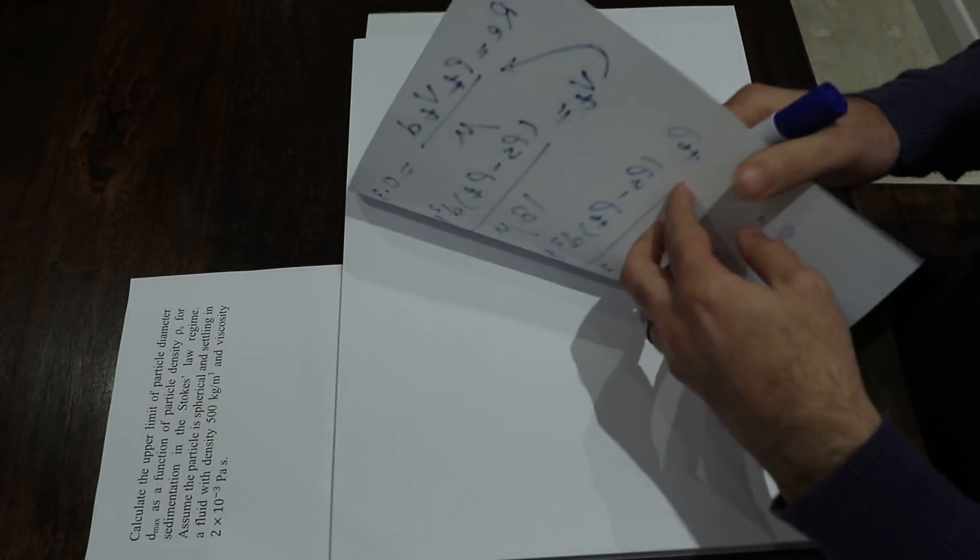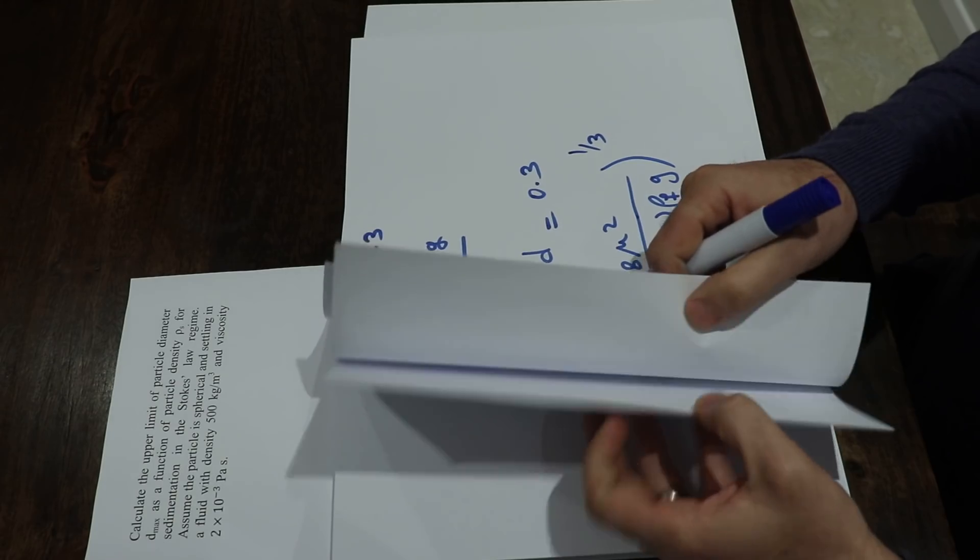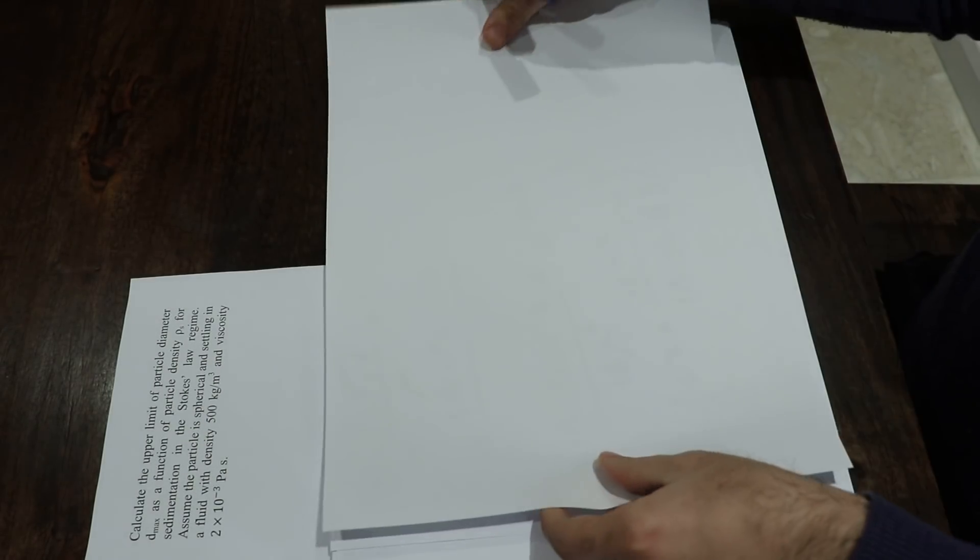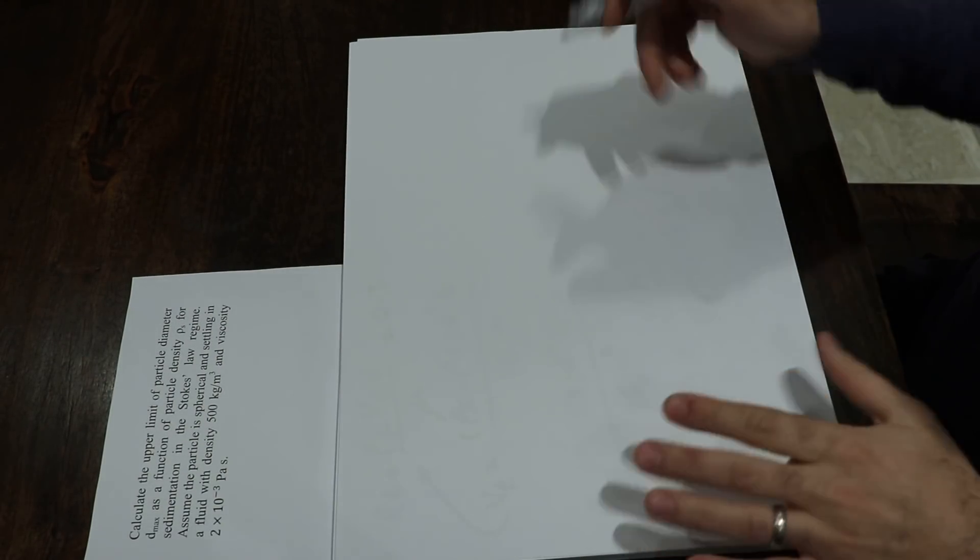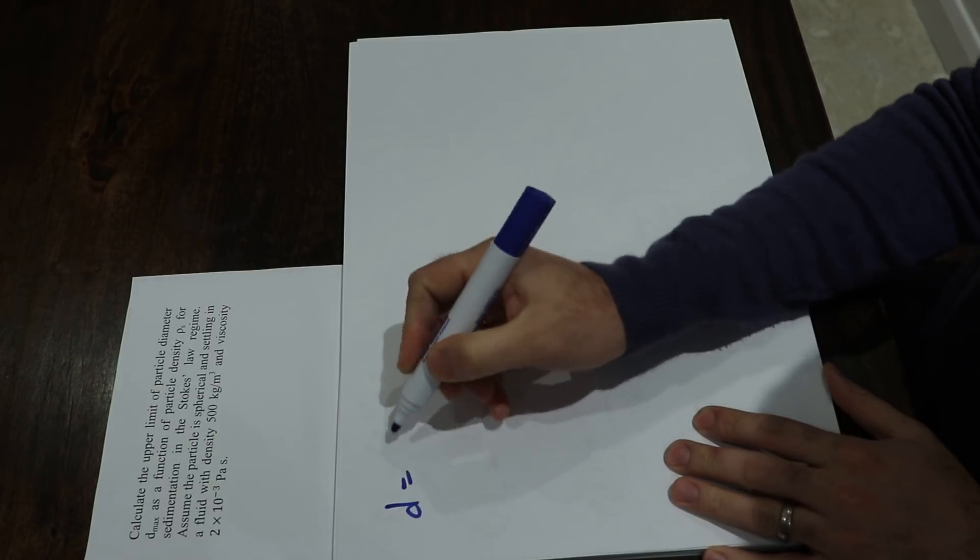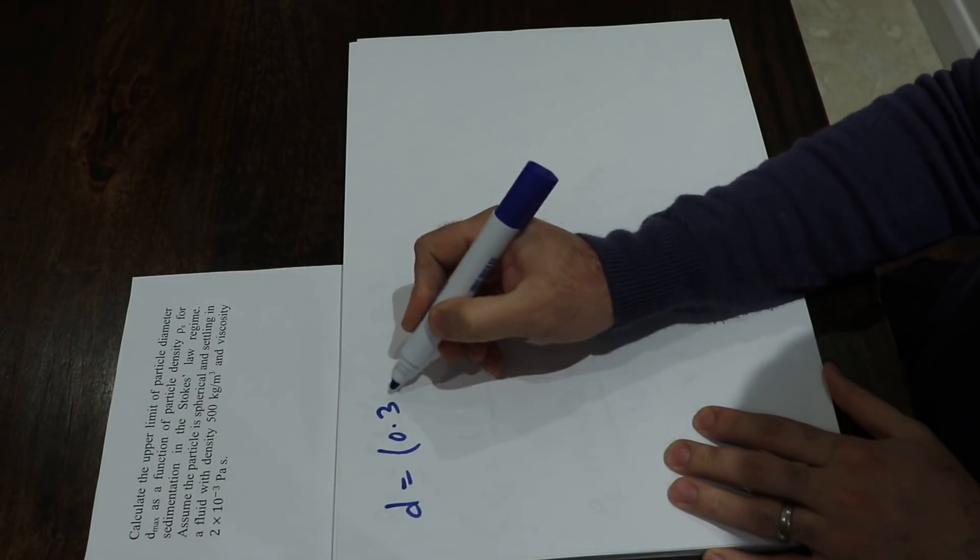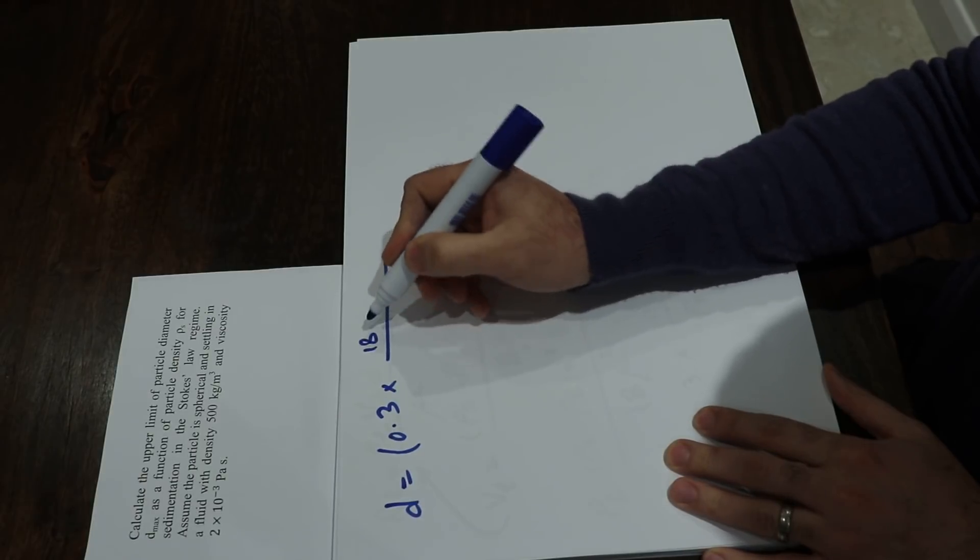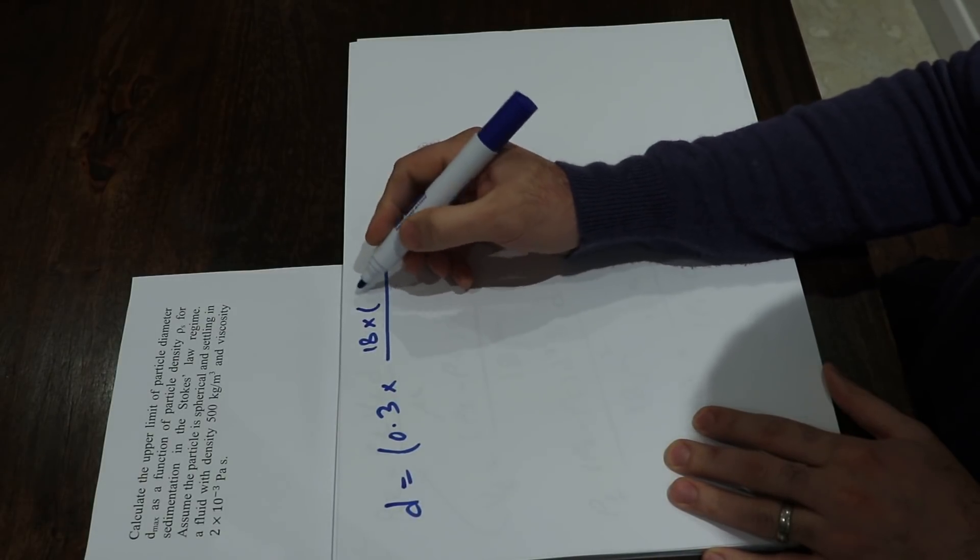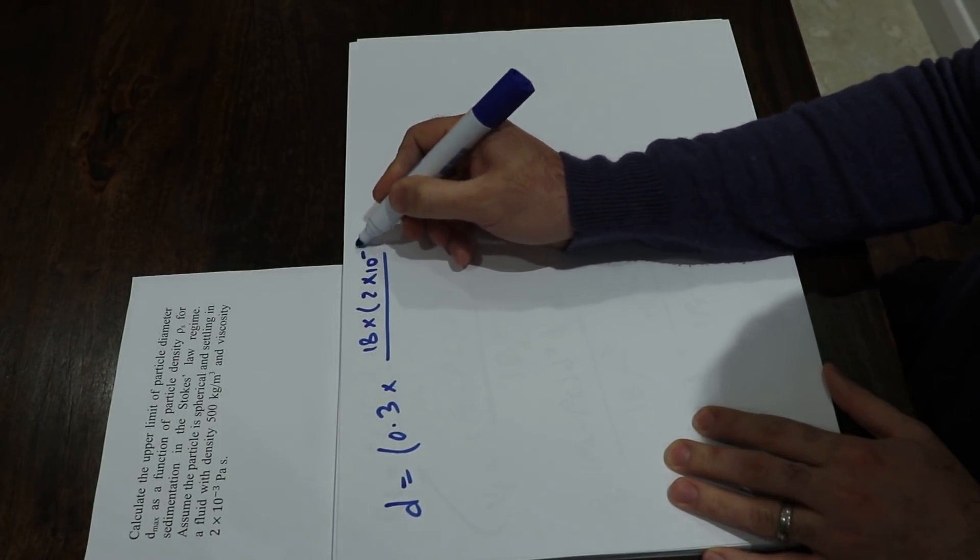If you do that, you will get d equals 0.3 times 18 times (2 times 10 to the minus 3) with the power of 2, that is the viscosity.